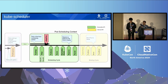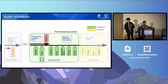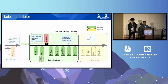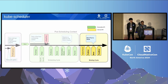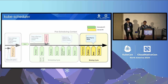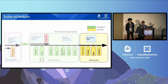The first stage is the scheduling cycle, which actually makes the decision — the computation of which node each pod should go to. It goes through a number of stages. The most important ones are the filtering and the scoring. Filtering calculates a yes or no answer for each node, whether the pod can run there or not, based on node labels, utilization, and so on. Then we do scoring, which implements preferences or optimization rules such as spreading.